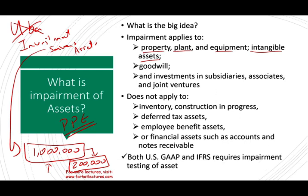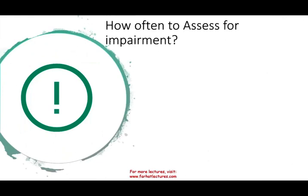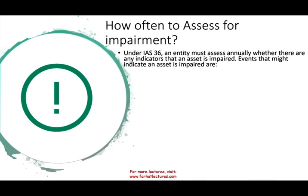Both US GAAP and IFRS require impairment testing of assets, though the rules differ. Under IAS 36, which is the IFRS requirement, an entity must assess annually whether there are any indicators that an asset is impaired. I'm going to give you some indicators — these are not the only ones, but they give you an idea of what companies should be looking at.